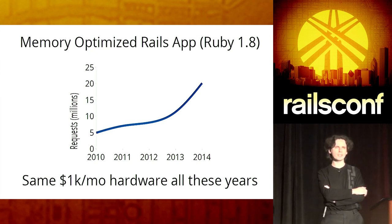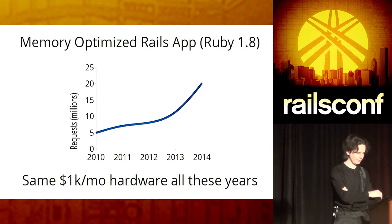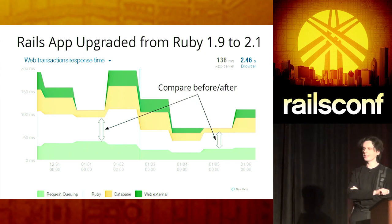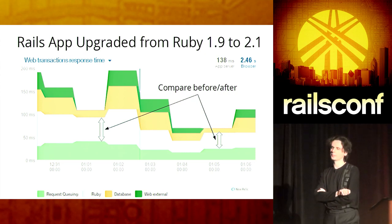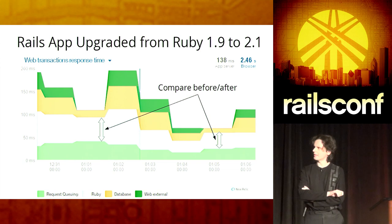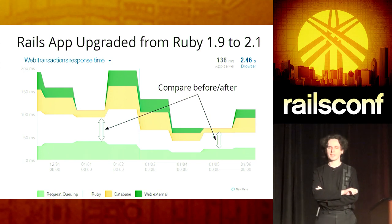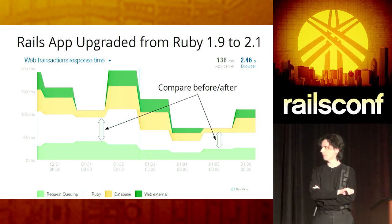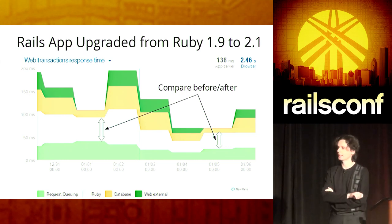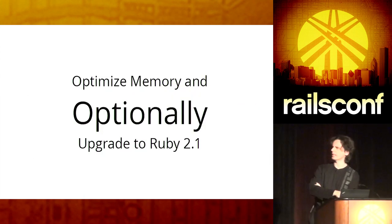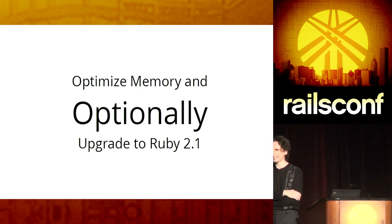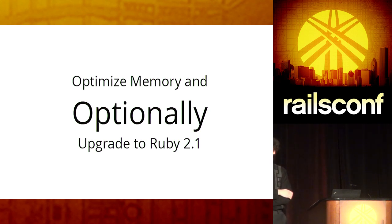It doesn't need new hardware. Why? We optimize memory. And here's another example, this time showing how 2.1 helps. This is a Rails app, a modern Rails app running on Heroku, and the 2.1 upgrade gave about 40 percent improvement as I expected. But what if you cannot upgrade, or do not want to upgrade, or you upgrade and nothing helps to improve your performance? The answer is simple: you just optimize memory.